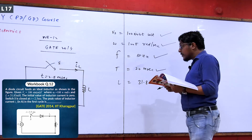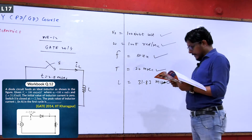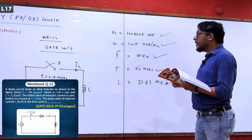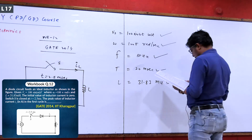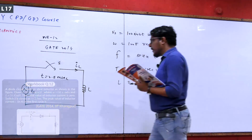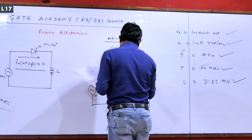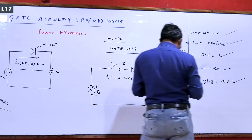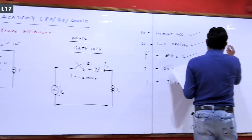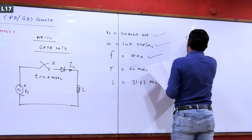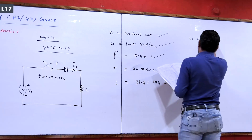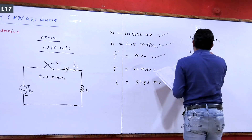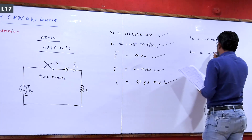The initial value of inductor current is zero. The switch is closed at T equal to 2.5 milliseconds. When you say time equals 2.5 milliseconds — millisecond means 10 to the power minus 3 — so that is 2.5 divided by 1000 seconds.